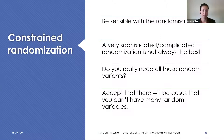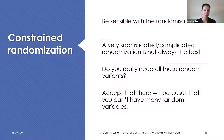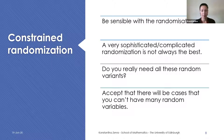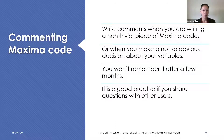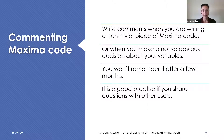Another aspect of randomization: do you really need all those random variants? Ten or twenty different versions look sensible for a quiz, but if you have 100, they may not all have the same difficulty. You also need to accept there will be cases where you can't have many random variables — for example, how many angles have a nice trig value. Try to write comments when writing a non-trivial piece of Maxima code or when you make a non-obvious decision about your variables or randomization. You won't remember what you wrote after a few months, and it's especially good practice if you share questions with other users who may not know how you built the question.